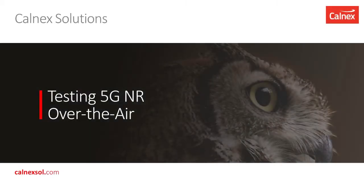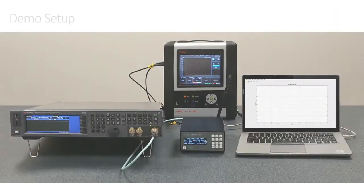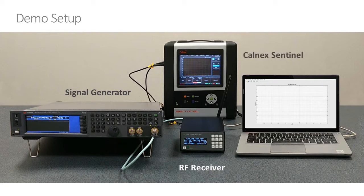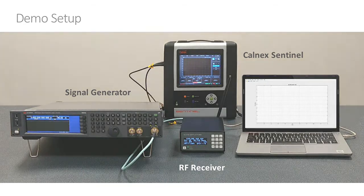Hello and welcome to this demonstration of our 5G over-the-air measurement system. This is our demo setup. We have a signal generator providing a 5G signal, an RF receiver which digitizes the received signal and sends it to the PC. We have Calnex providing a 1PPS reference into the RF receiver, and then the MATLAB application on the PC computes the synchronization time error and displays it as a graph.